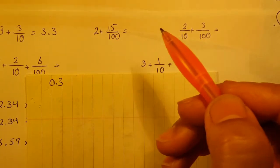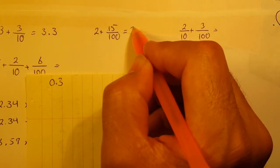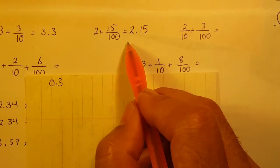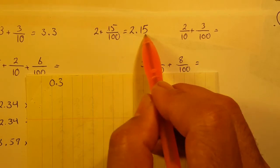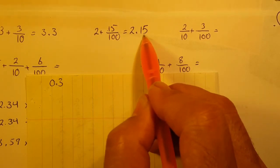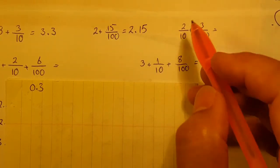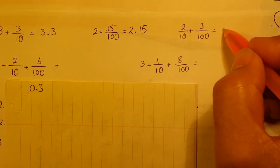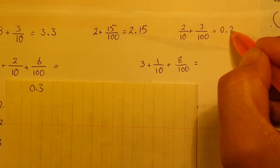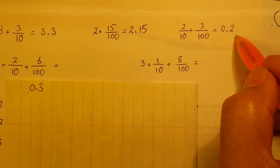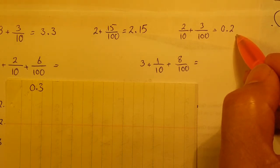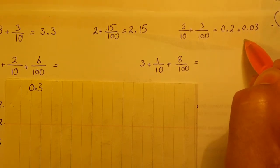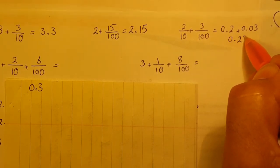2 plus 15 over 100 shown as a decimal is 2.15. So 2 is the whole number and 15 over 100 is 0.15. For 2 over 10 plus 3 over 100: 2 over 10 is 0.2 and 3 over 100 is 0.03, so the answer is 0.23.